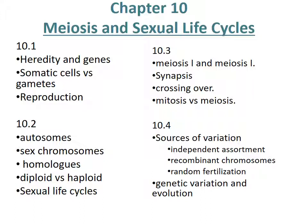This time we're going to talk about everything in chapter 10. We're going to talk about heredity and genes, somatic cells and gametes, reproduction, autosomes, sex chromosomes, homologues, diploid and haploid cells, sexual life cycles, meiosis 1 and meiosis 2, synapses, crossing over, and how mitosis and meiosis are different. Then we'll talk about sources of variation and how genetic variation and evolution go together, though we'll talk much more about evolution in unit 5.